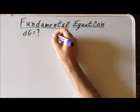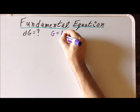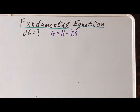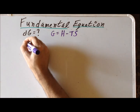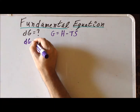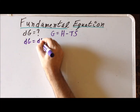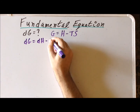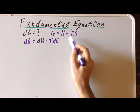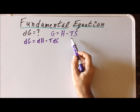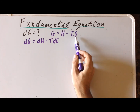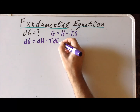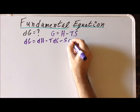Recall that the Gibbs free energy G is defined as the enthalpy H minus T, the temperature, times S, the entropy. Taking the differential dG gives dH, and we must apply the product rule. So we have minus TdS, and since it is a product of two functions the derivative is the first times the derivative of the second, plus the second times the derivative of the first, giving minus SdT.